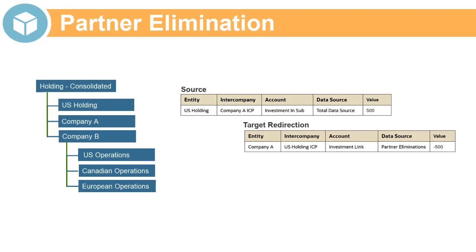Configurable consolidation rules with partner eliminations enable you to write data directly to a sibling of the entity currently being consolidated, if the sibling is its intercompany partner, or if one of the sibling's descendants is its intercompany partner. In the example, U.S. Holding has an investment in Company A, its sibling, recorded in the Investments in Subsidiaries account, with Company A as the intercompany partner member.